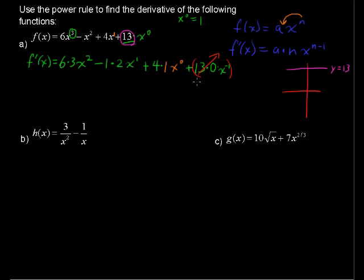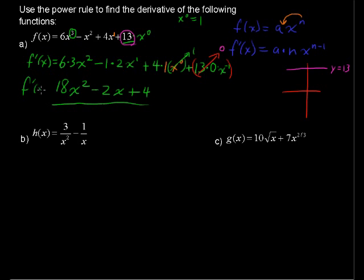So that last term is 0. Simplifying the rest: 6 times 3 is 18, so 18 times x squared, minus 2 times x, plus x to the 0 power is just 1, so this is simply plus 4. That is the first derivative of the function — as opposed to the second or third derivative. We're just finding the first derivative for now.